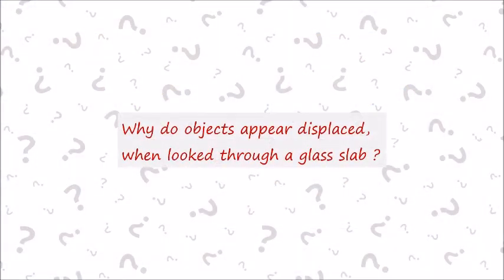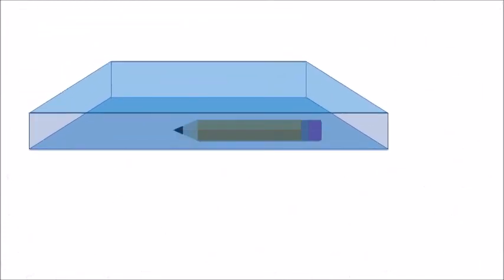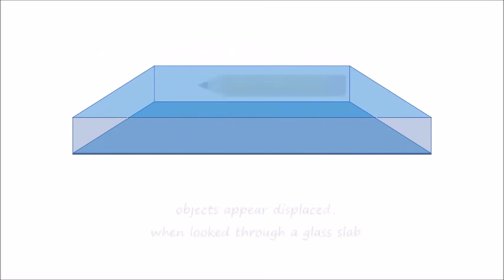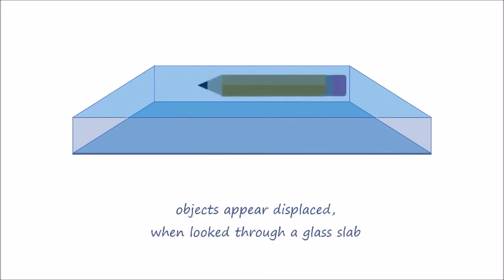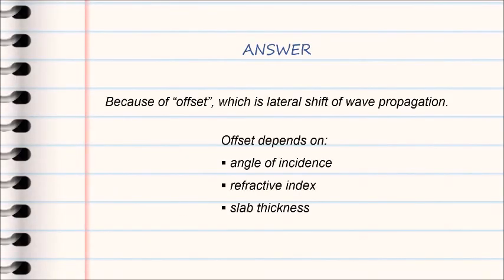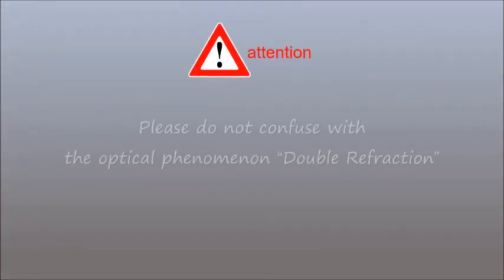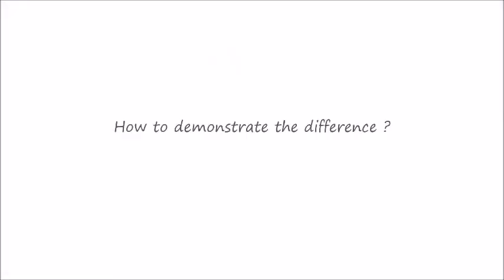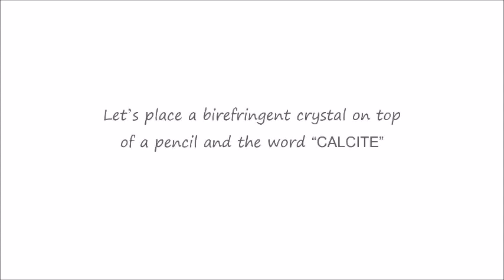Why do objects appear displaced when looked through a glass slab? Please do not confuse this with the optical phenomenon of double refraction. To demonstrate the difference, let's place a birefringent crystal on top of a pencil — the word calcite.